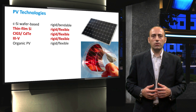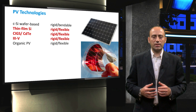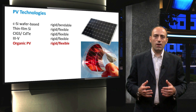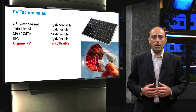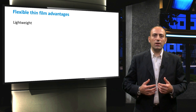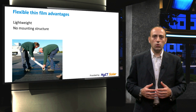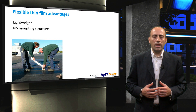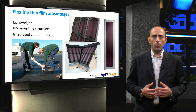Gallium arsenide is generally used in concentrator PV and in space applications. These technologies can be produced on both rigid and flexible substrates. There are also some organic PV technologies based on dye-sensitized solar cells that can be made semi-transparent. Producing thin film technologies on flexible substrates has some advantages: they are lightweight and can therefore be used on areas with a low weight-bearing capacity. The flexible substrates also do not require a mounting structure, which reduces the balance of system and installation costs. Another advantage is that the modules can be integrated into roof tiles and other building components, as shown here.